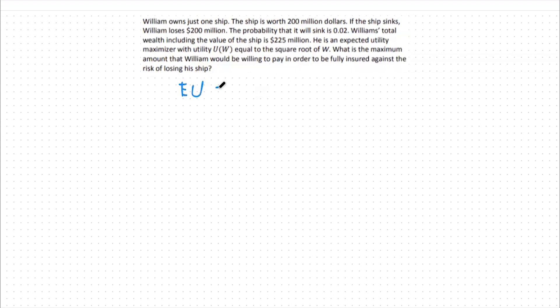Our expected utility in general is equal to the probability of the bad state occurring times our utility in the bad state. In this case, we're told that the square root of w is our utility function, so we can plug that in here.